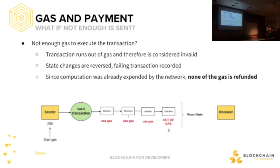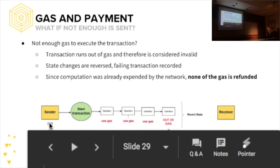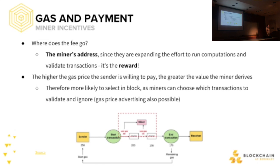What if there's not enough gas to execute the transaction? The transaction runs out of gas, it's considered invalid, the state changes for that block you were trying to get are reversed, and the failing transaction is recorded. You can look up your failed transaction on Etherscan — the gas won't be refunded because people already put work into your transaction. In the diagram: a sender starts a transaction, uses gas, runs out of gas, has to revert the state, doesn't even reach the receiver, and ends up with less money.